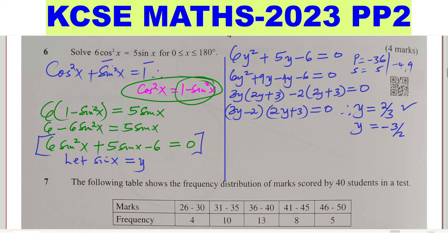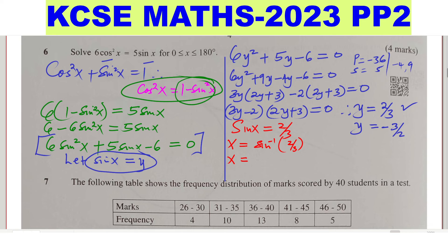The question asks for x, not y. Since y was sine x, substitute back: sine x equals 2/3. To get the angle x, take sine inverse of 2/3, which gives 41.81 degrees. Considering the range 0 to 180 and the unit circle, sine is positive in the first and second quadrants, and 2/3 is positive — so we get 41.81 degrees from the first quadrant.